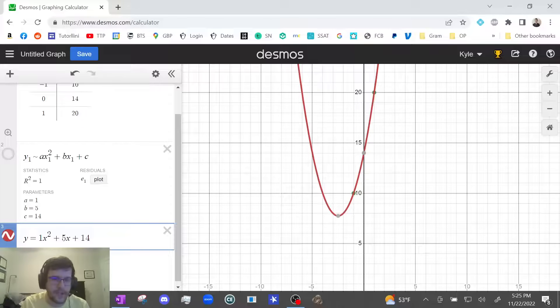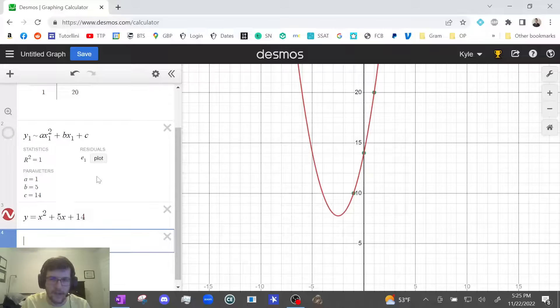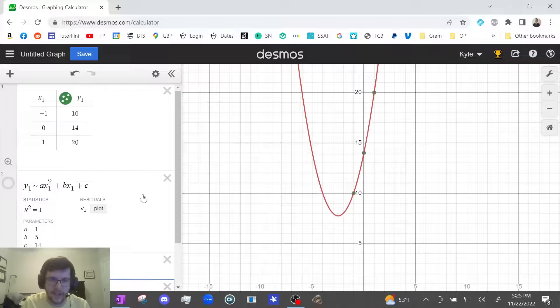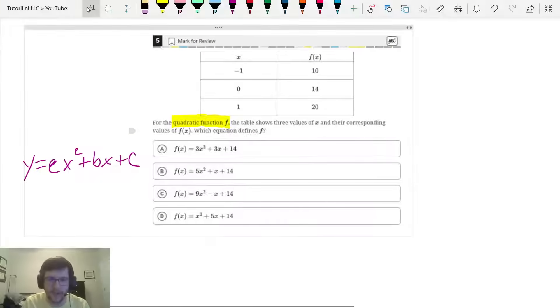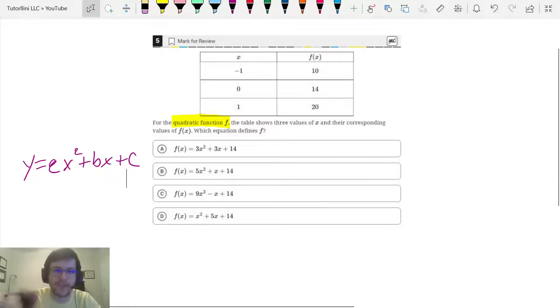But just remember, we don't write 1 as a coefficient. It's implied. Okay let's make sure that's still right. Ah it looks good. It goes through all the points. And I think we're all set for this one. So let's go back. Let's see if that's an answer choice. x squared plus 5x plus 14. Ah that is an answer choice. Option D. Very helpful for this one. It saved us a good bit of time.